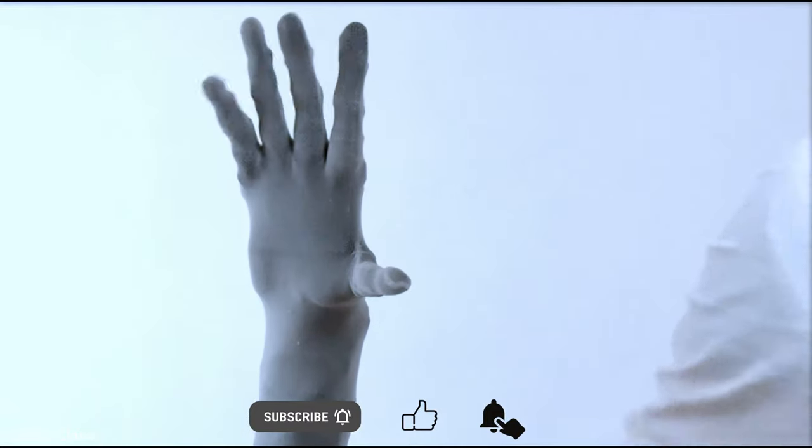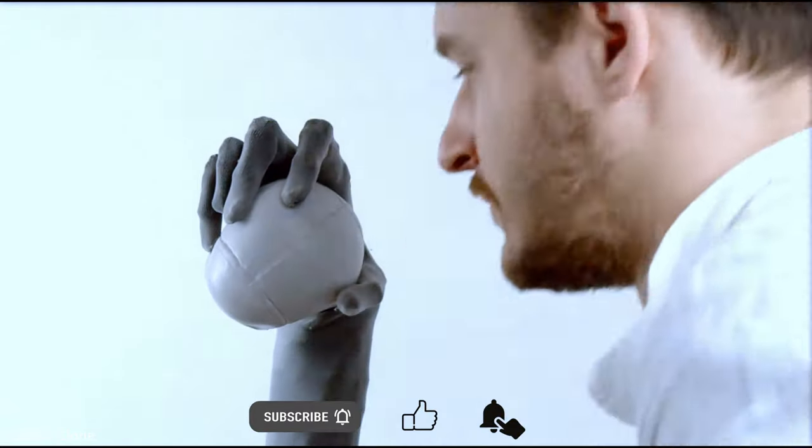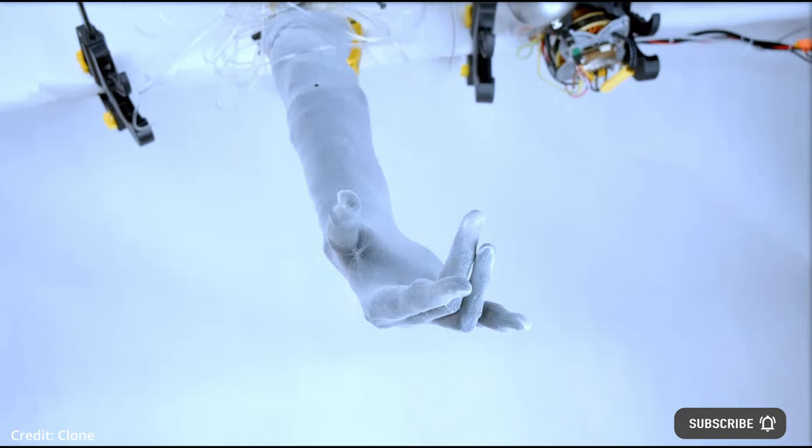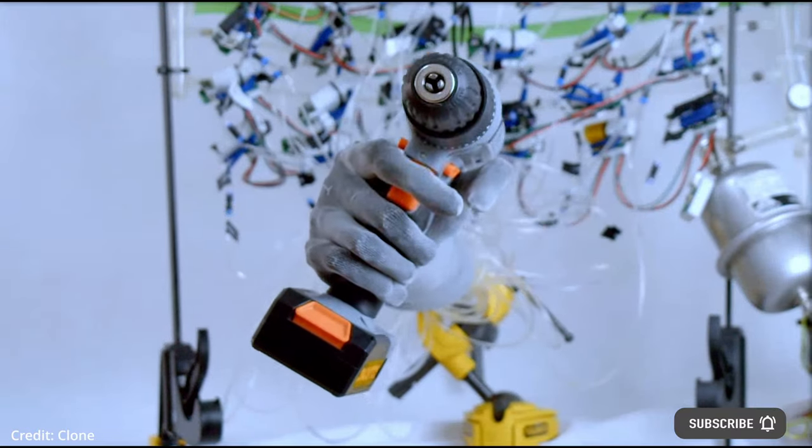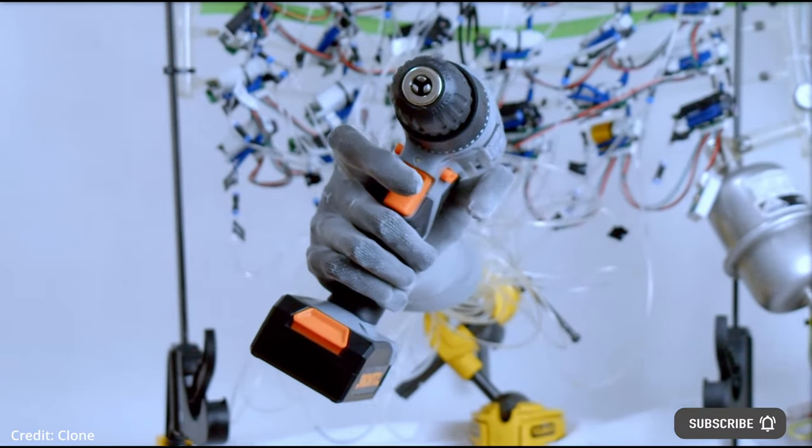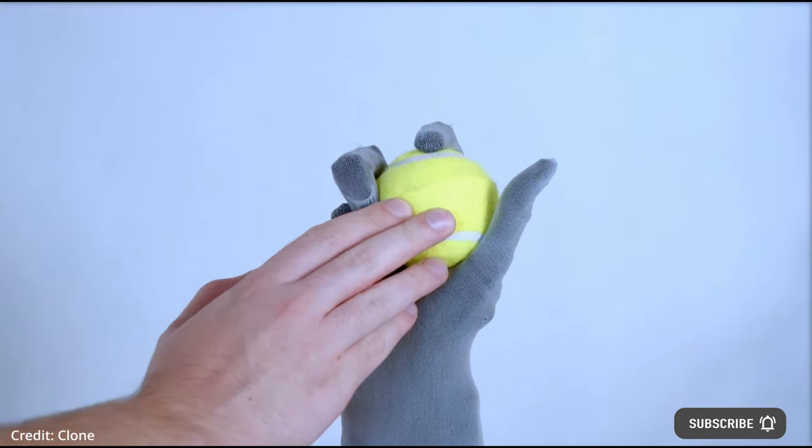Clone Robotics claims to have created the first biomimetic hand, named model number V15, which is capable of grasping all kinds of objects, regardless of shape, from tennis balls to suitcases to weights and more.